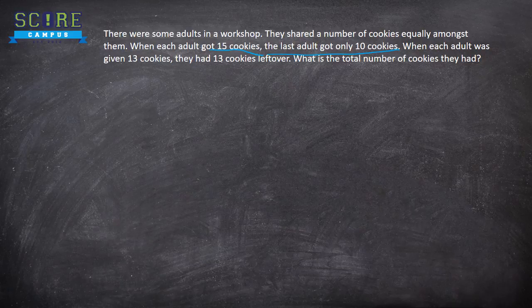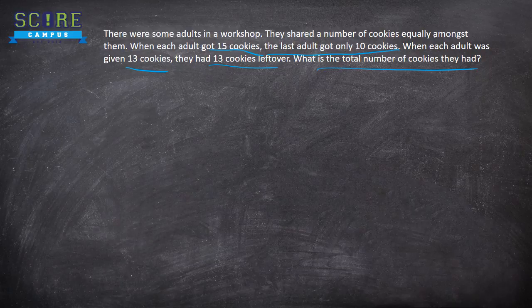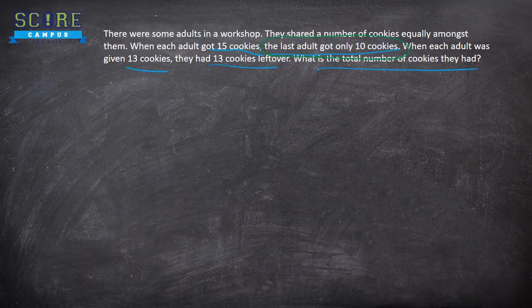When each adult was given 13 cookies, they had 13 cookies left over. What is the total number of cookies they had? So now, do you see what is the change? Here, instead of saying that there were some cookies short, they said how many cookies the last person got. So you have to interpret yourself what is the number of cookies that were short.